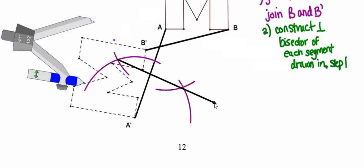So there's my perpendicular bisector of segment A, A prime. And then the second thing I'm going to do is I'm going to construct the perpendicular bisector of my other line segment, B, B prime.